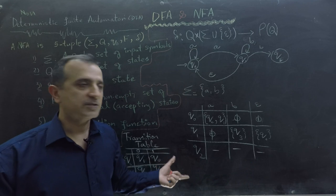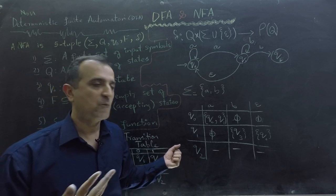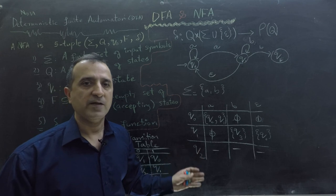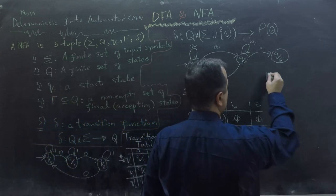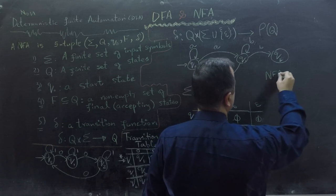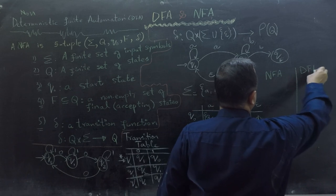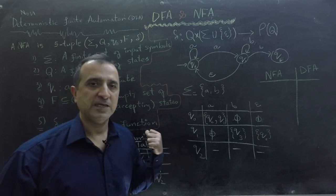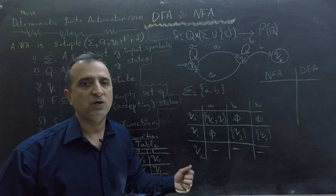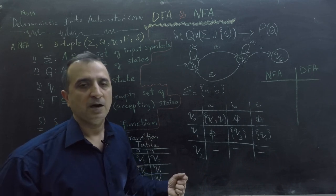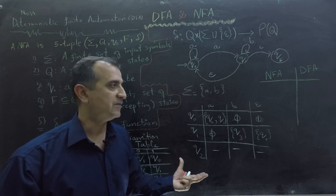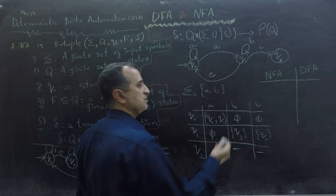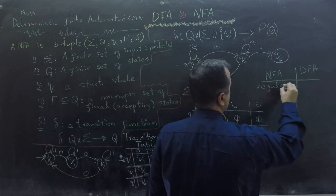Now the important question: which one is better and which one is more powerful, which is faster, etc.? Let's make a table and compare NFA and DFA. In terms of power — which of those machines accepts a larger set of languages — both machines are equal in power because both accept regular languages. So both are equivalent to each other in terms of power.